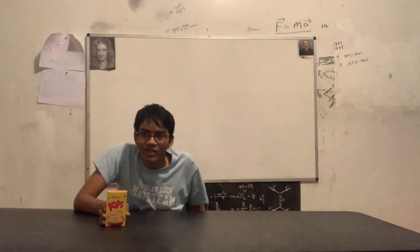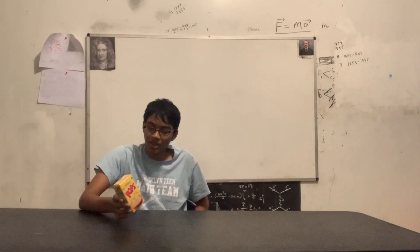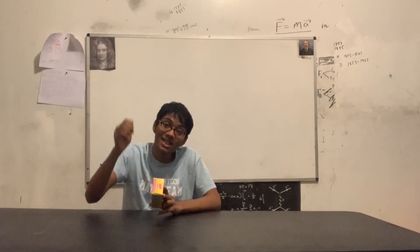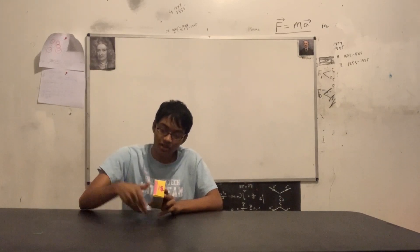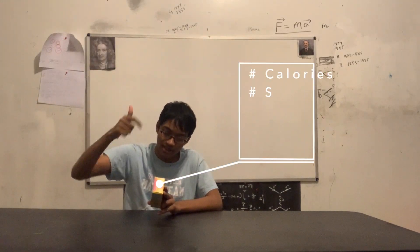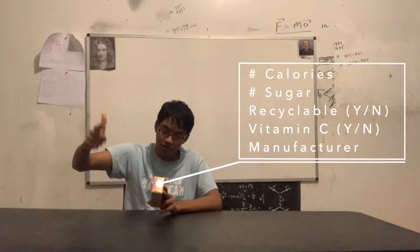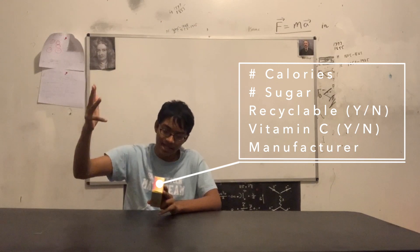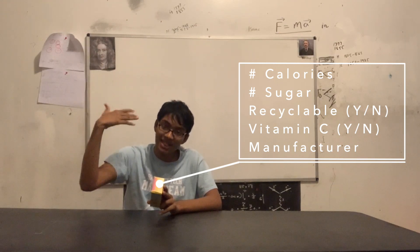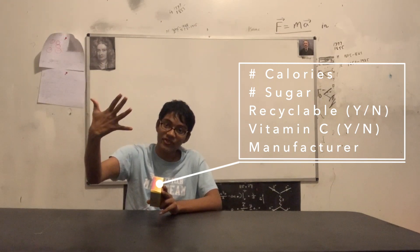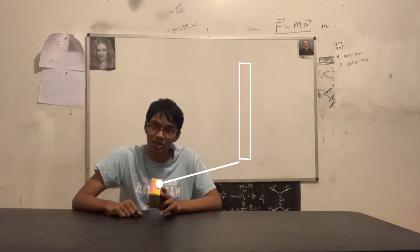I want to look at the different variables we're going to be taking a look at and classify each of them. As I said before, the different variables are: calories, amount of sugar, is it recyclable, does it have vitamin C, and manufacturer. Those are the five variables we'll be looking at.